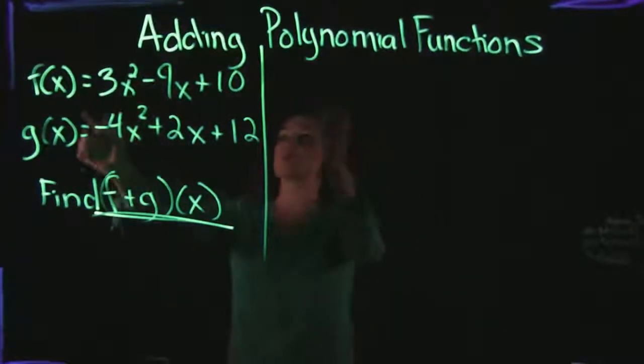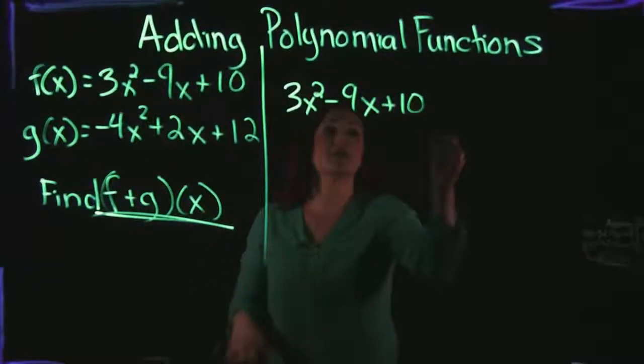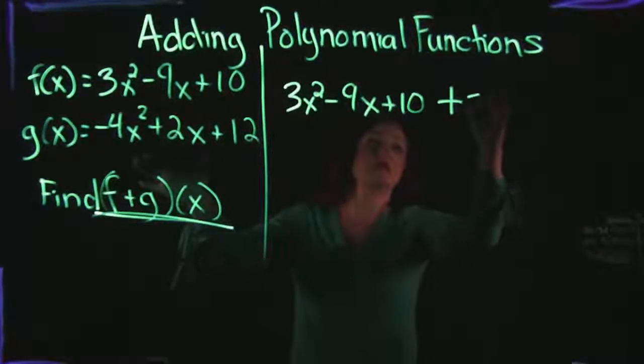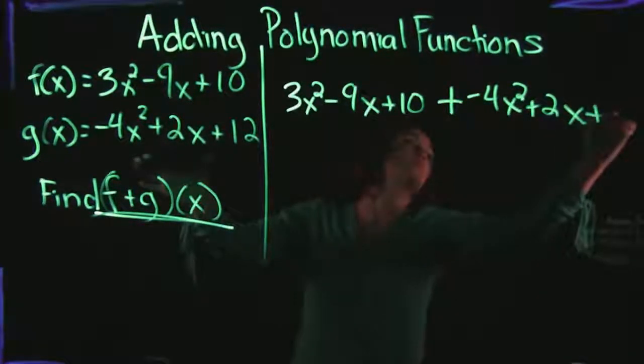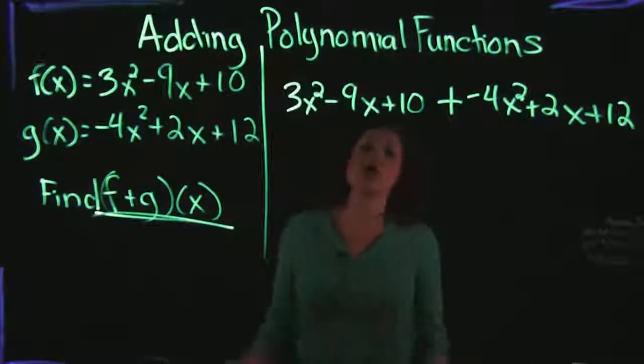So essentially what we're wanting to do is we want to take f of x, which is 3x squared minus 9x plus 10, and we want to add this together with g of x, which is negative 4x squared plus 2x plus 12. So we're going to take these two functions together and we're going to combine them and add them.